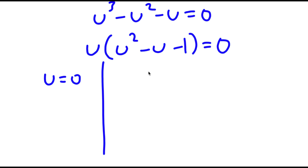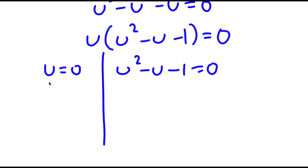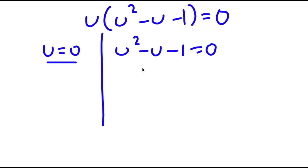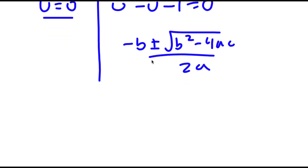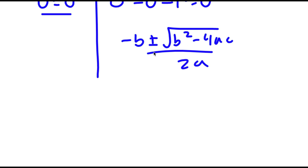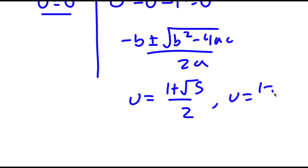I can divide this into two parts: u equals 0, and u squared minus u minus 1 is equal to 0. For u squared minus u minus 1 equals 0, I use the quadratic formula — negative b plus or minus the square root of b squared minus 4ac over 2a. This gives u equals 1 plus the square root of 5 over 2, and u equals 1 minus the square root of 5 over 2.